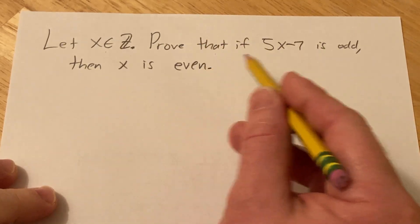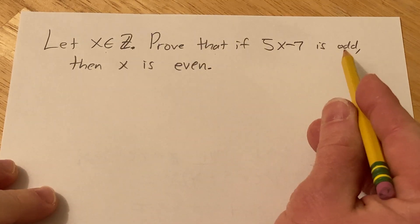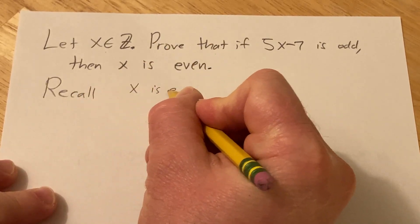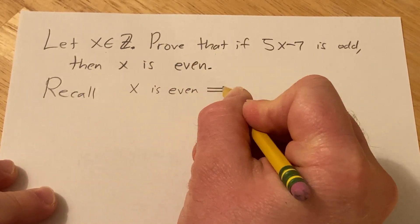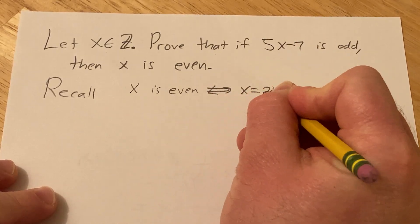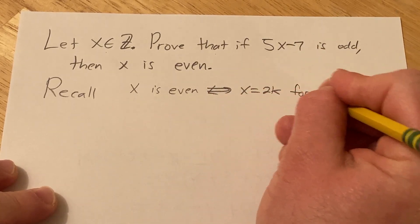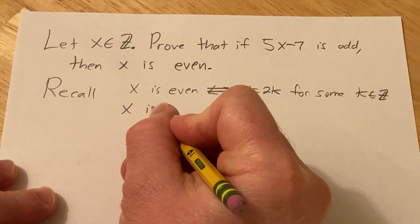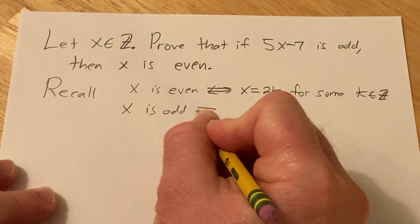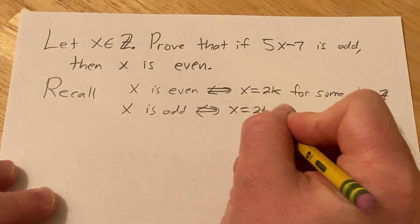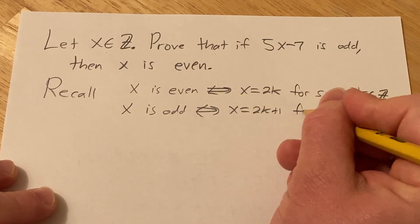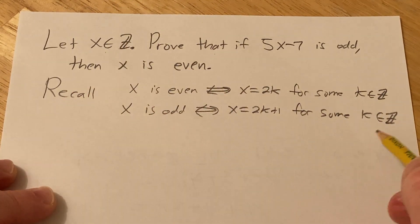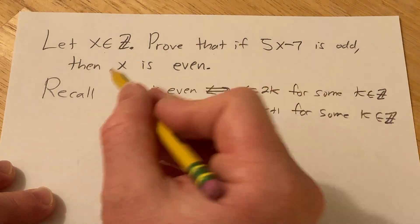So before we do this problem, you really have to know what it means for an integer to be even or odd. So recall, we say that x is even. This basically means that x is a multiple of 2. So x equals 2k for some k in Z. And x is odd. This is equivalent to saying x equals 2k plus 1 for some k in Z. This Z is the set of integers, and this symbol means is in or belongs to.